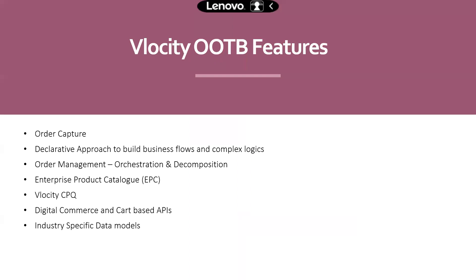These are a few advantages of using Velocity. There are certain specific standard features that come out of the box from Velocity that make clients more excited. The first thing is Order Capture Journey. For any online sales platform — any e-commerce, be it Amazon or Flipkart — it's basically divided into two parts. From the time the customer comes into a website till he does the payment, that whole process is called Order Capture. And from the time the customer does the payment till the product actually gets delivered, that whole process is called Order Management.